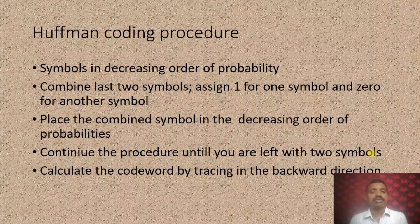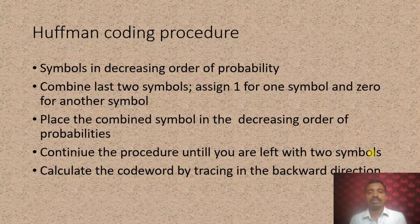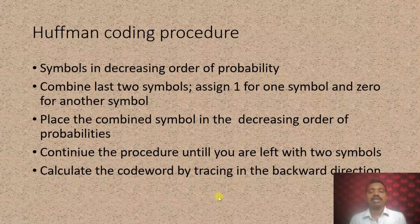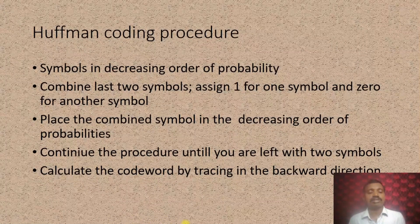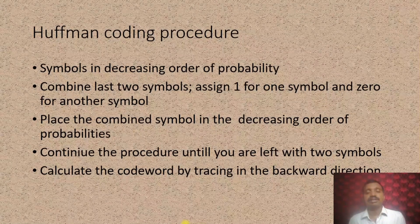In the Huffman coding procedure, the symbols are first arranged in decreasing order of probabilities. Then we combine the last two symbols and assign 1 for one symbol and 0 for another symbol. Then place the combined symbol back in decreasing order of probabilities. Continue this procedure until you are left with only two symbols. Then calculate the code word by tracing in the backward direction.